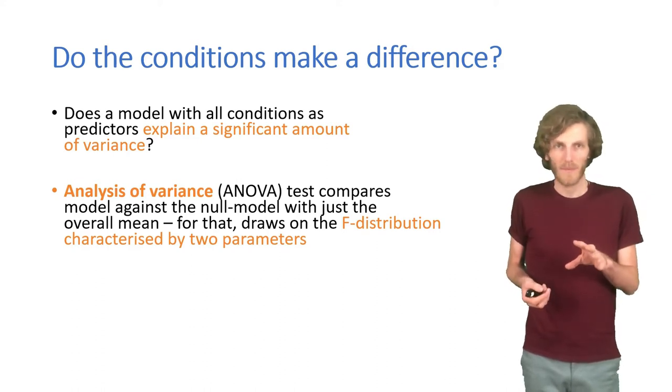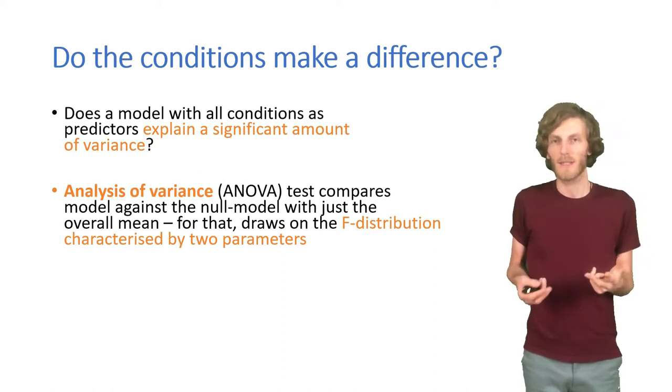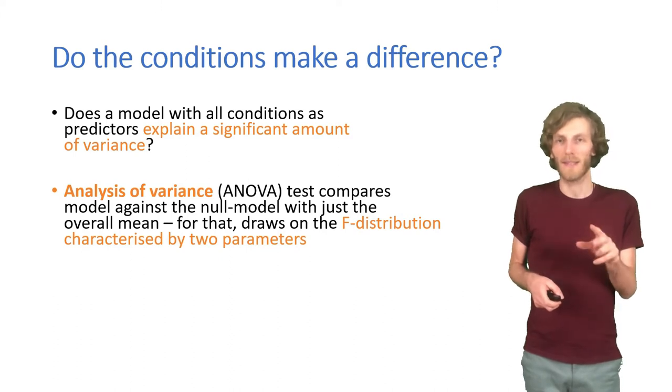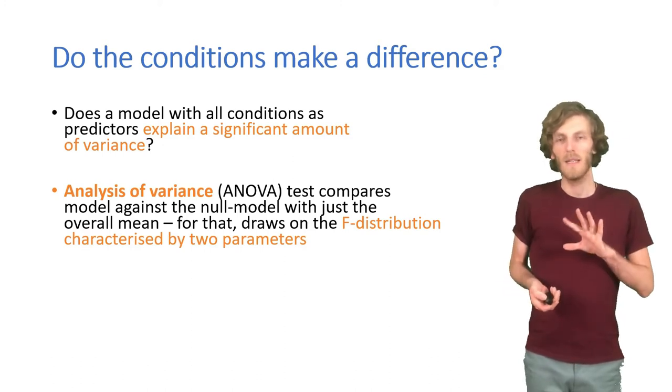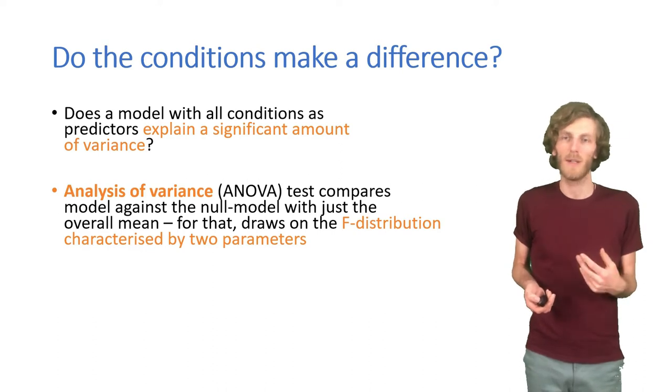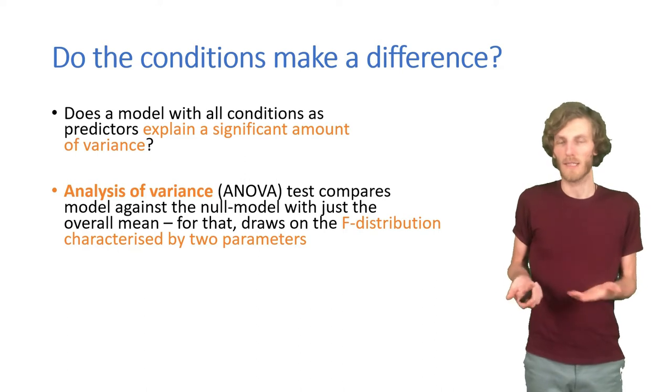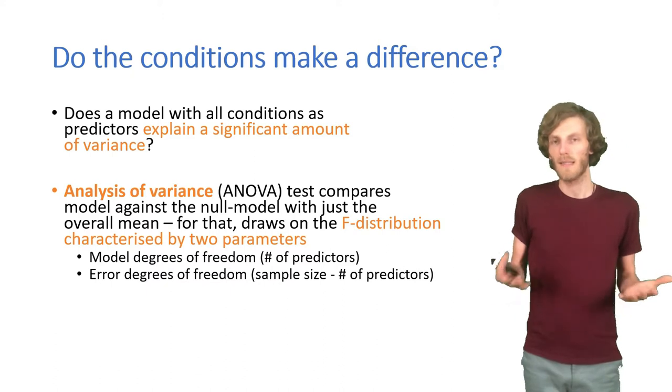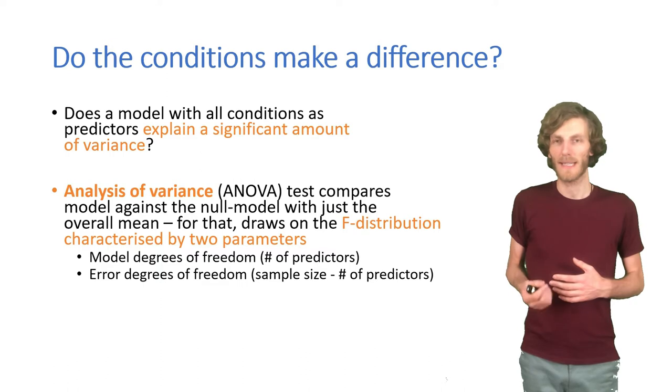The way it works is that we use a distribution that's called the f-distribution to see whether the share of variance that our model explains is significantly different from nothing, from no additional variance explained by our model. For this f-distribution, we need two parameters, so it's always reported with these two parameters. One is the model degrees of freedom, which just is the number of parameters, and then the error degrees of freedom, which is what remains of our sample size after we have taken the number of predictors out.